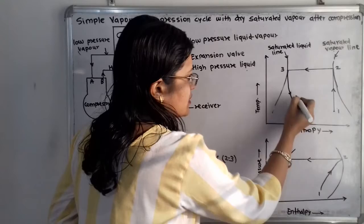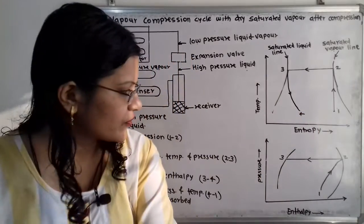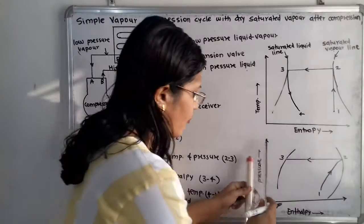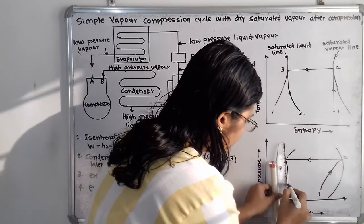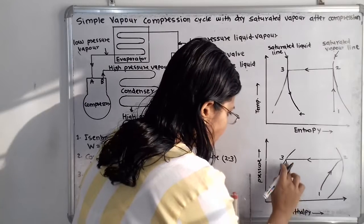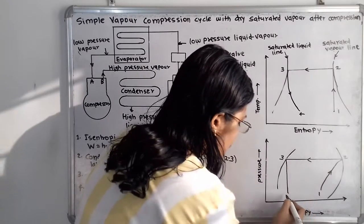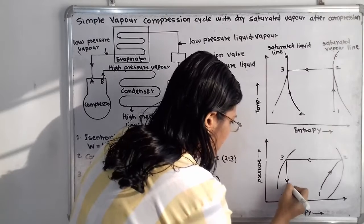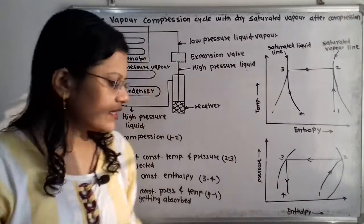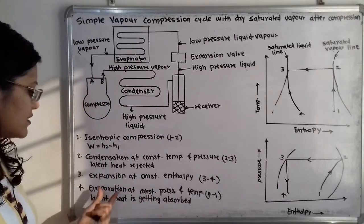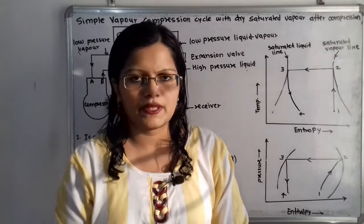This is process 3 to 4. On the pressure-enthalpy diagram, we draw a vertical line for constant enthalpy. Point 4 is shown between the saturated liquid line and the saturated vapor line. The next process is evaporation, which takes place at constant pressure and temperature.